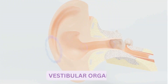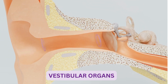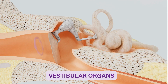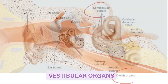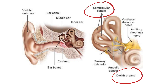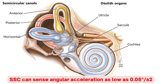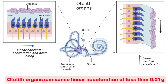Second is vestibular organs. The vestibular organ is about the size of a pea in the inner ear. It has two components: semicircular canals and otolith organs. Three semicircular canals, which are at 90 degrees to each other, are responsible for detecting angular acceleration. The otolith organ detects linear acceleration. The semicircular canal can sense angular acceleration as low as 0.05 degrees per second squared, and the otolith organ can sense linear acceleration of less than 0.01 g.